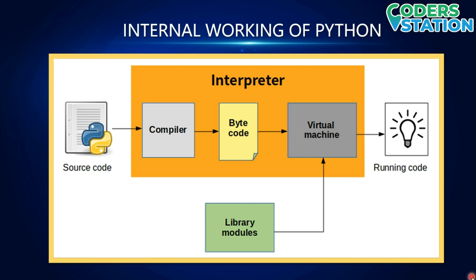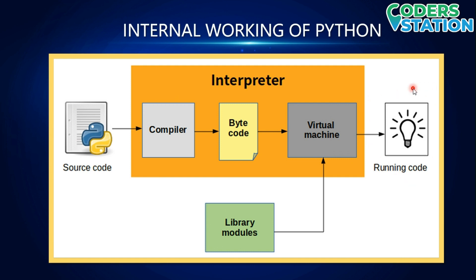On my screen you are able to see a diagram. This diagram represents the internal working of Python. First is the source code, second one is the interpreter — and in the interpreter there is a compiler, bytecode, and virtual machine. We also have library modules and a running code.